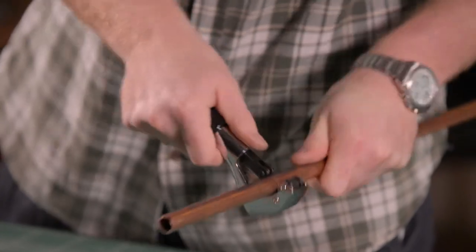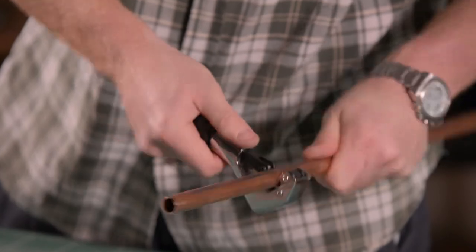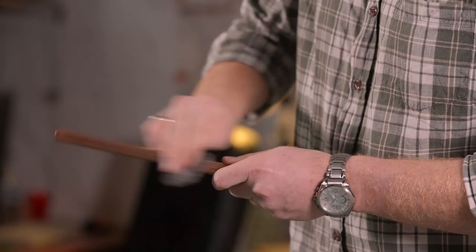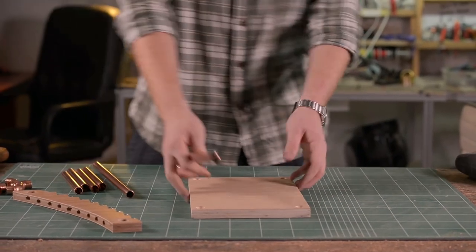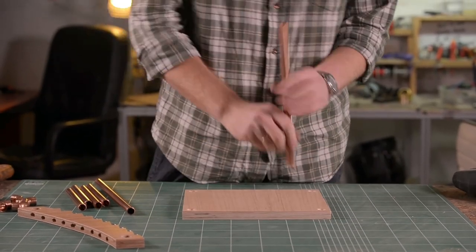For the legs, I used some 5 eighths of an inch copper pipes. I've cut them to length with a pipe cutter and went over them with steel wool to give them some shine. After two coats of spray lacquer, both on the plywood and the copper, it's time for assembling.